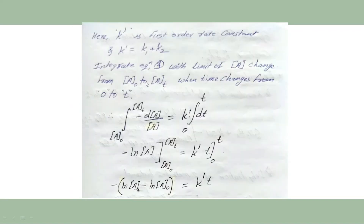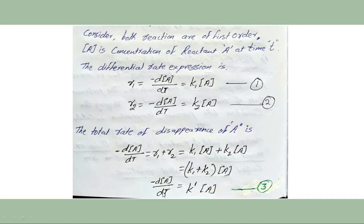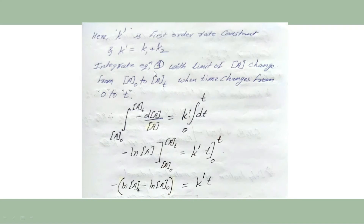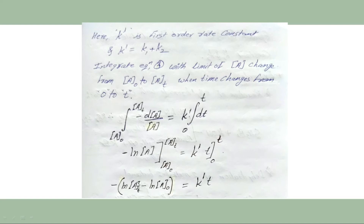We now integrate equation 3, shifting [A] to the left-hand side and dt to the right-hand side. Integrating with concentration of A changing from A₀ to Aₜ and time from 0 to T: the integration of −d[A]/[A] equals K′ integrated over dt. Integration of d[A]/[A] is ln[A], so we get: −(ln Aₜ − ln A₀) = K′T.